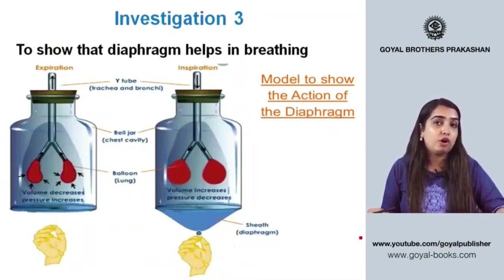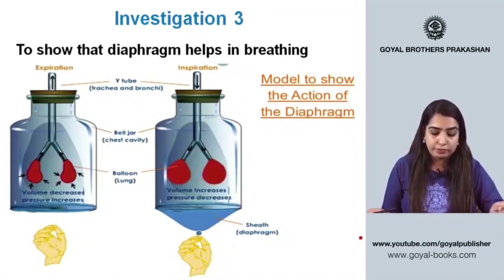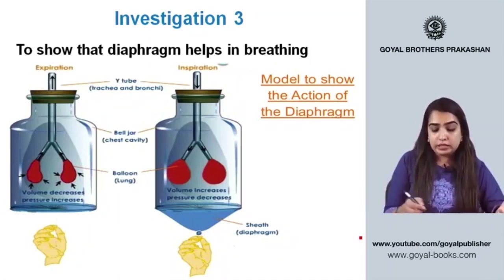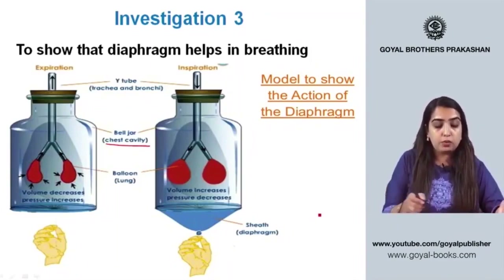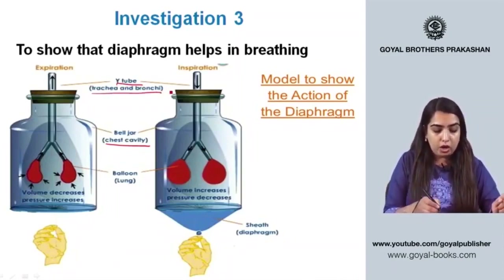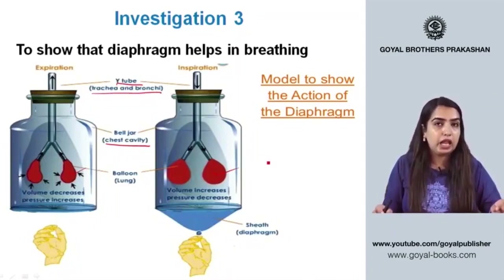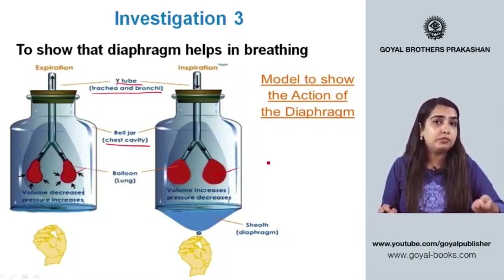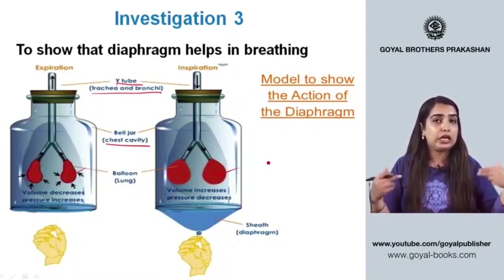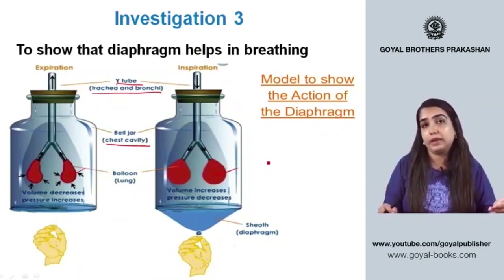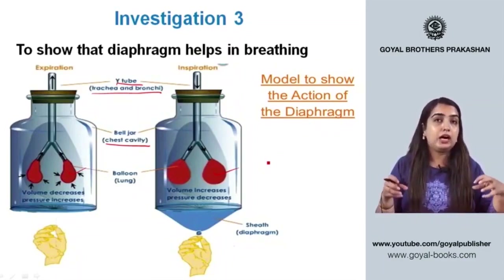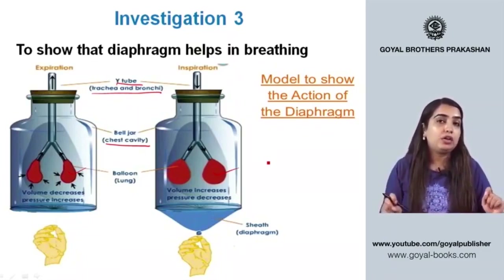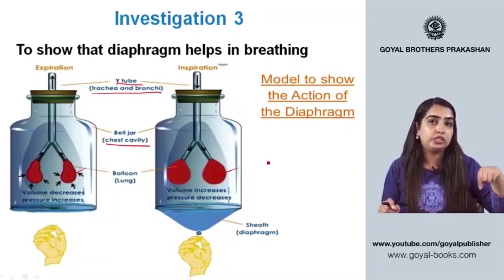Another investigation is to show that the diaphragm helps in breathing. For this, you need two bell jars representing the chest cavity, Y-tubes acting as trachea and bronchi, balloons acting as lungs, and a sheath acting as the diaphragm. Ensure they are closed with a cork that has a hole so the Y-tube can be inserted.